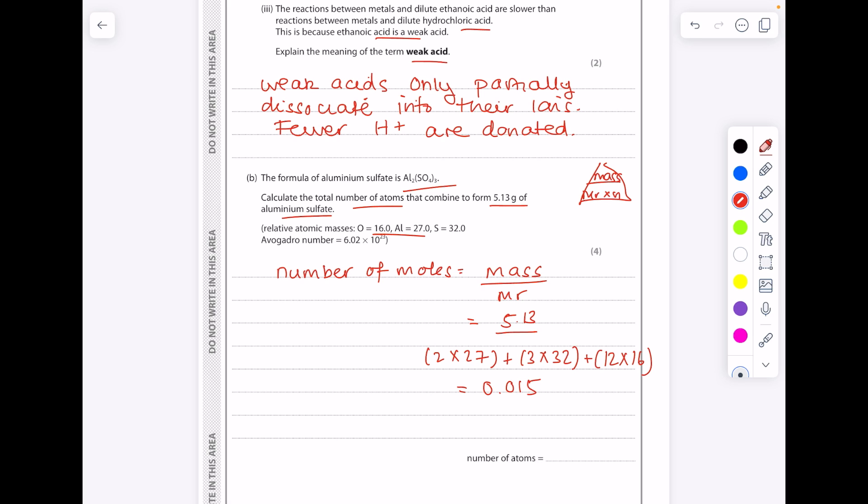And then in terms of the number of atoms, let's first of all work out how many aluminium sulphates we have. If we know that one mole contains 6.02 times 10 to the 23, we know that 0.015 moles contains—put that into your calculator—9 times 10 to the 21 aluminium sulphates.